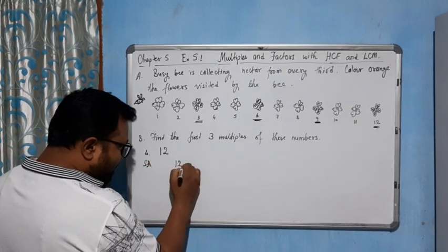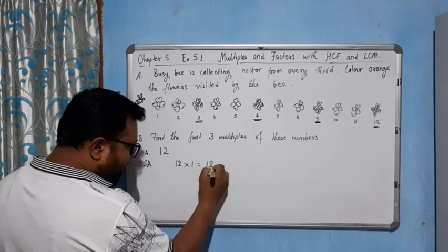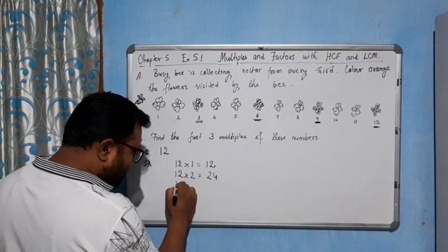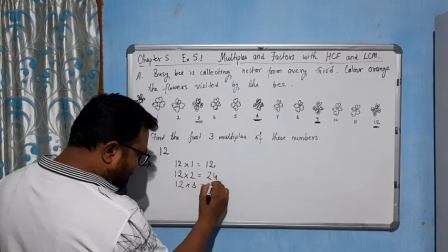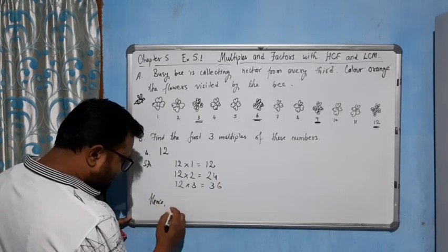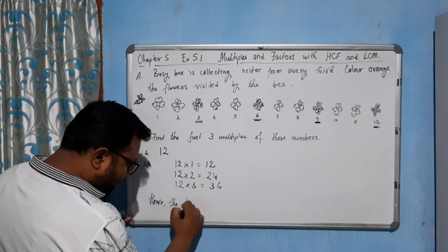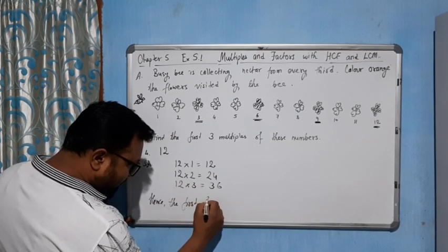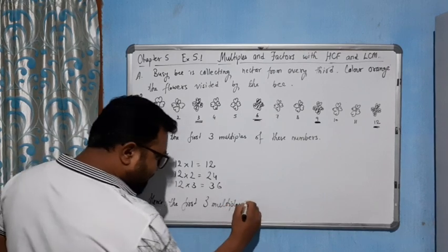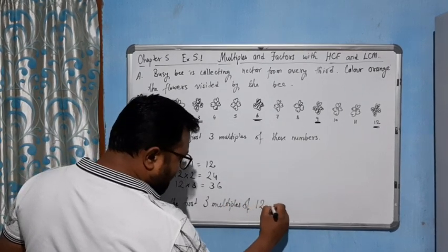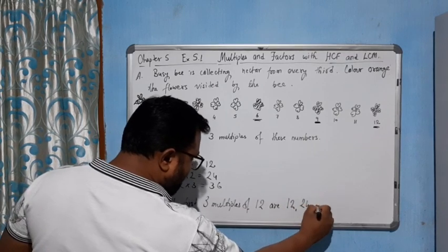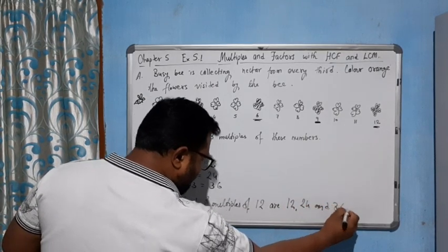Now for 12: 12×1=12, 12×2=24, 12×3=36. Hence the first three multiples of 12 are 12, 24, and 36.